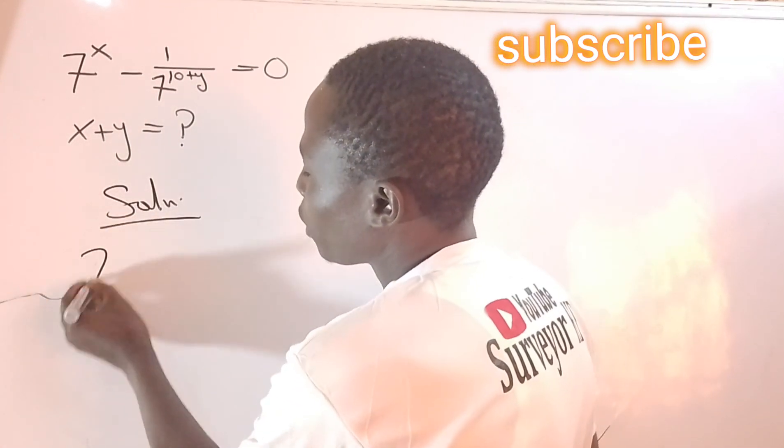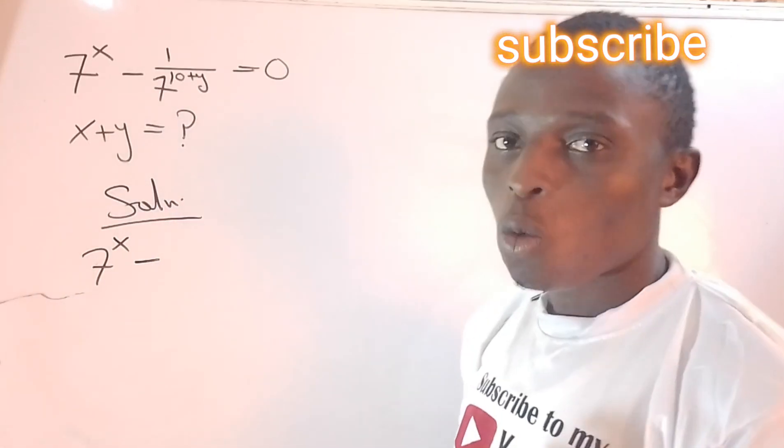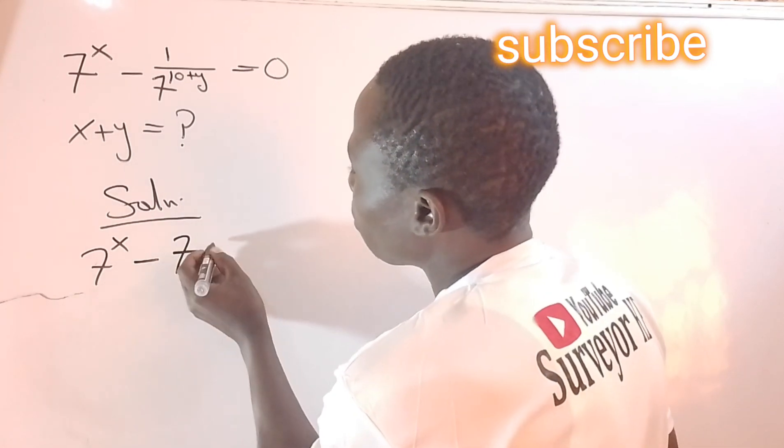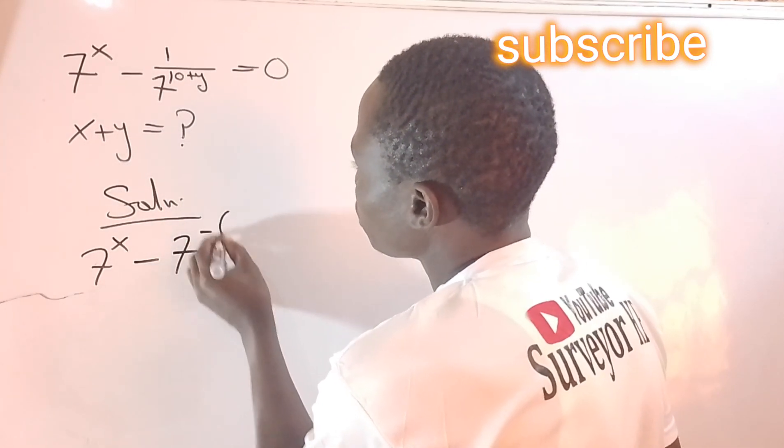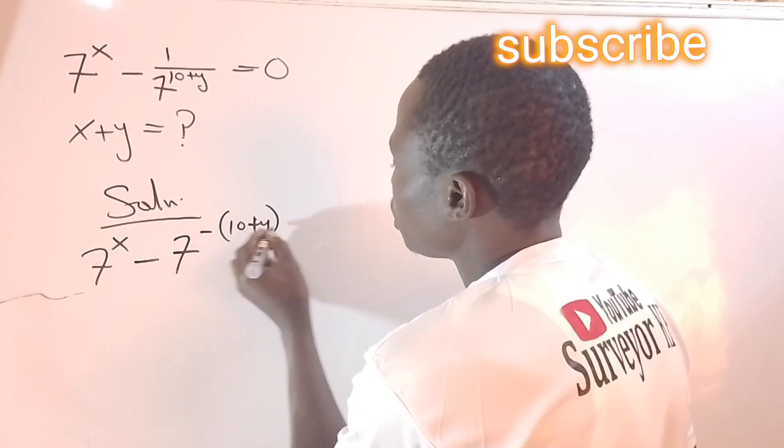Solution: 7^x minus the whole of 1 divided by 7^(10+y). I can use the reciprocal method by saying this becomes minus 7^-(10+y), which equals zero.